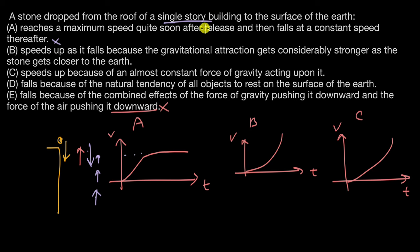Option B is clearly wrong because we are talking about something very close to the surface of the earth, so we can assume the gravitational force is constant at that level. Option C says it speeds up because of an almost constant force of gravity — this is the right answer. It says 'almost constant' because it accounts for being very close to, but not exactly at, the surface. Since gravity is constant and air resistance is negligible, the speed constantly increases. Option C is correct.